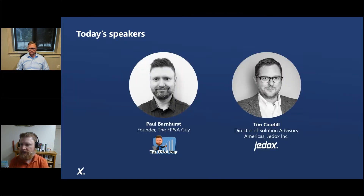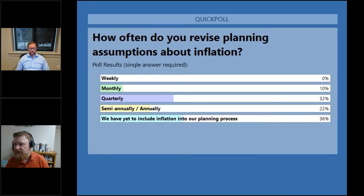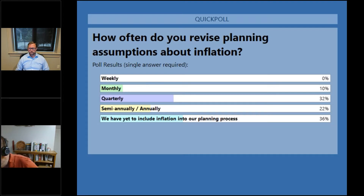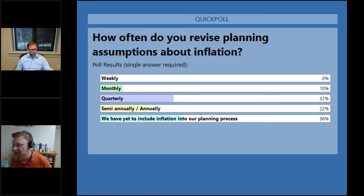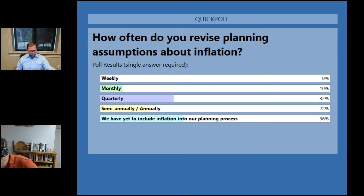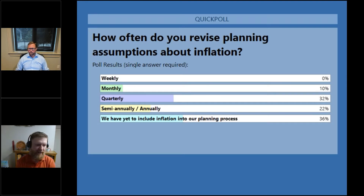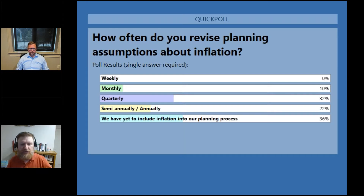We'll go ahead and close the poll and see the results. It looks like the biggest, which is a little surprising, is we have not yet included inflation in the planning process — that's 36%. The next biggest is 32% quarterly, and then there's a spread of monthly and semi-annual. Nobody's doing it weekly, which isn't surprising — it'd be difficult to have the data. But in some volatile industries like energy, you're constantly changing price based on spot prices.